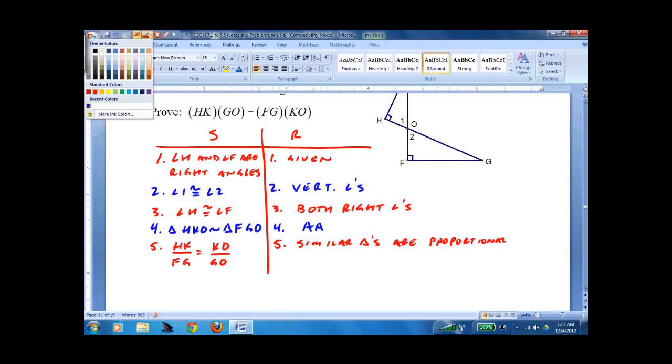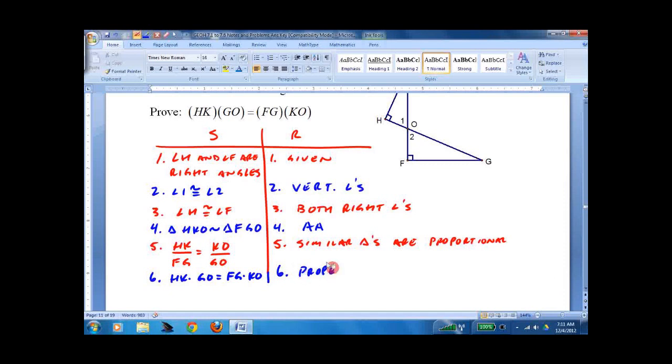And last but not least. We actually write what we came for. HK times GO equals FG times KO. And you could write cross multiply. But I'm going to say property of proportions. Meaning that I can cross multiply them. And they're still equivalent.